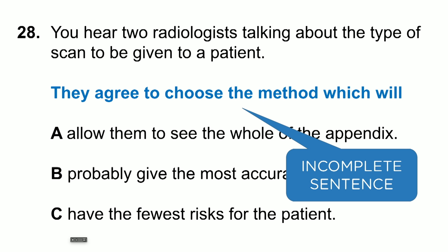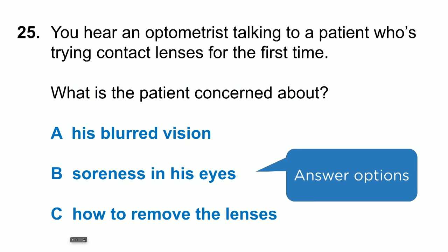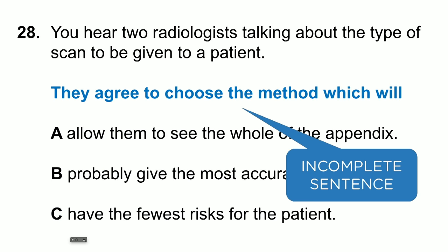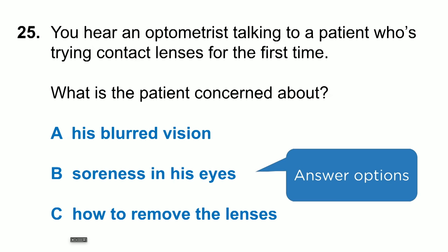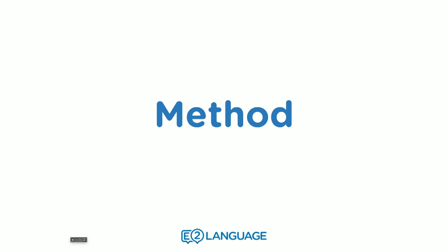With an incomplete sentence, there is no question mark, and A, B, or C will complete the sentence. You will also see three answer options, and the length of the options can change — here they're quite long, here they're quite short.